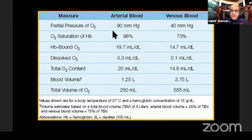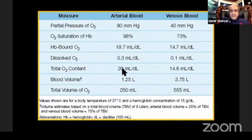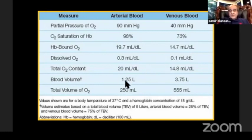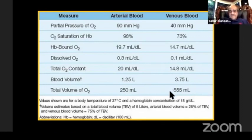The partial pressure of oxygen is 90 in the arterial system and 40 in the venous system. Oxygen saturation is 98% arterial and 73% venous. About oxygen content — how much is in the arterial versus venous — the arterial blood volume is about 1.25 liters, in contrast to venous blood volume which is about 3.57 liters. Most of the oxygen is found in the venous system because blood is about 75% found there.